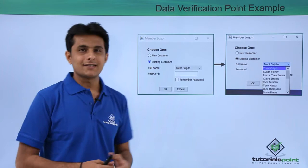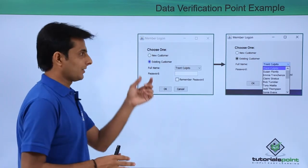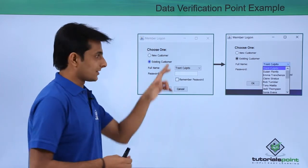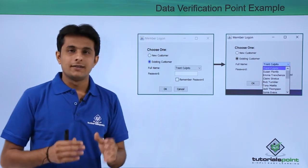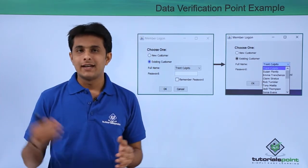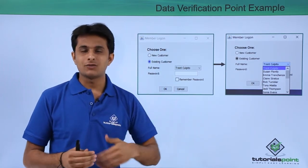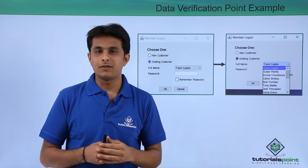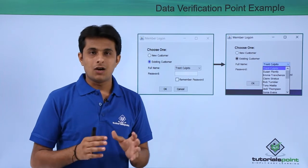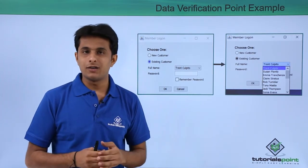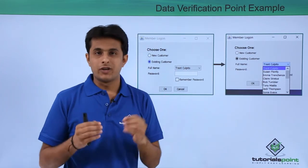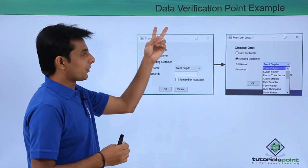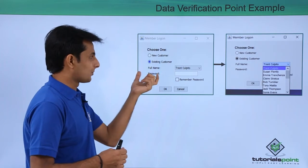Let's see an example. I have this classic CDA application where there are different types of data available — radio button data and a full name dropdown. In that full name dropdown there are almost 19 elements. Every fortnight, that is every 15 days, the developer gives me a new build. In one build there were 25 elements — six more were added. Doing functional testing, it's difficult to manually track the count of data, so verification point is the concept that makes this task easier.